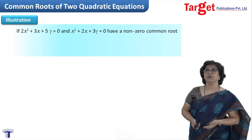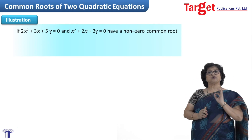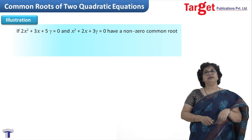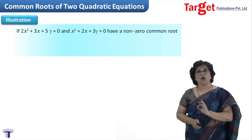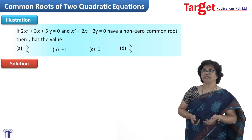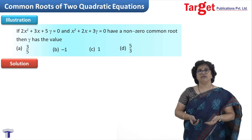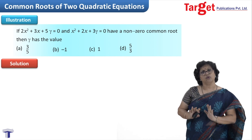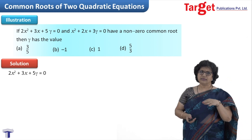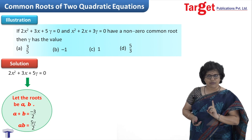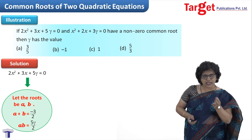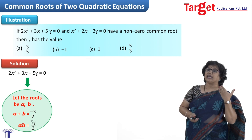I am given two equations: 2x² + 3x + 5γ = 0 and x² + 2x + 3γ = 0. They have a non-zero common root and we want to find the value of γ, with four options given. One procedure is to go methodically: say there is a common root α and another root β. So I take the first equation 2x² + 3x + 5γ = 0 and say one root is α and the other root is β.